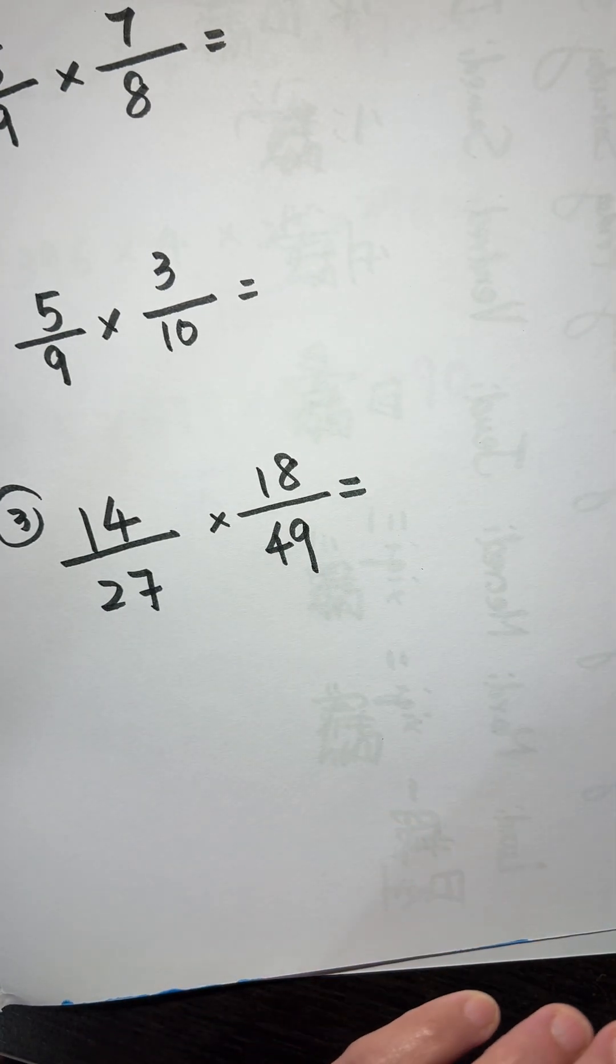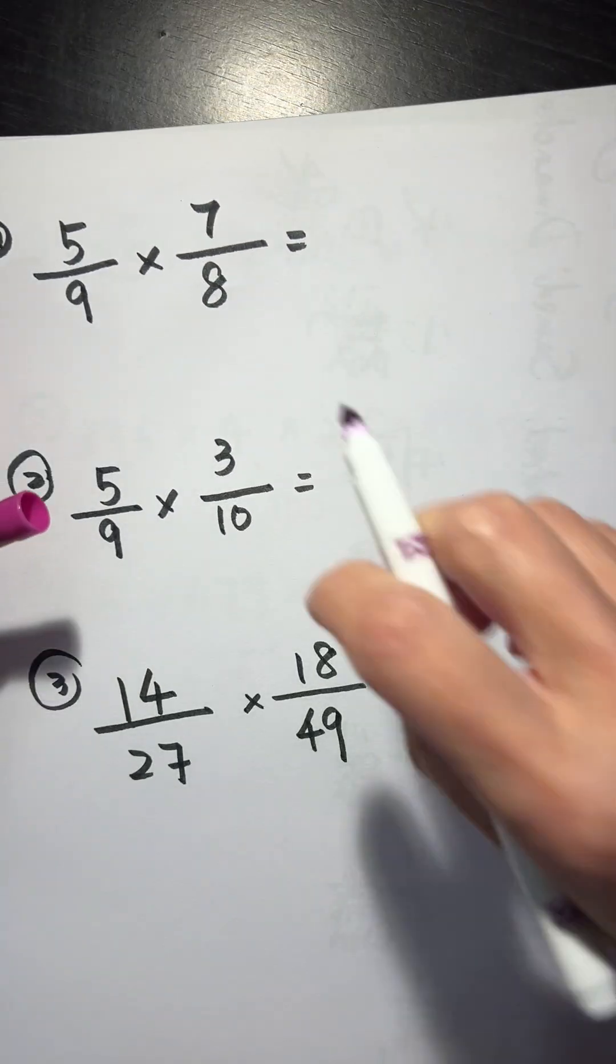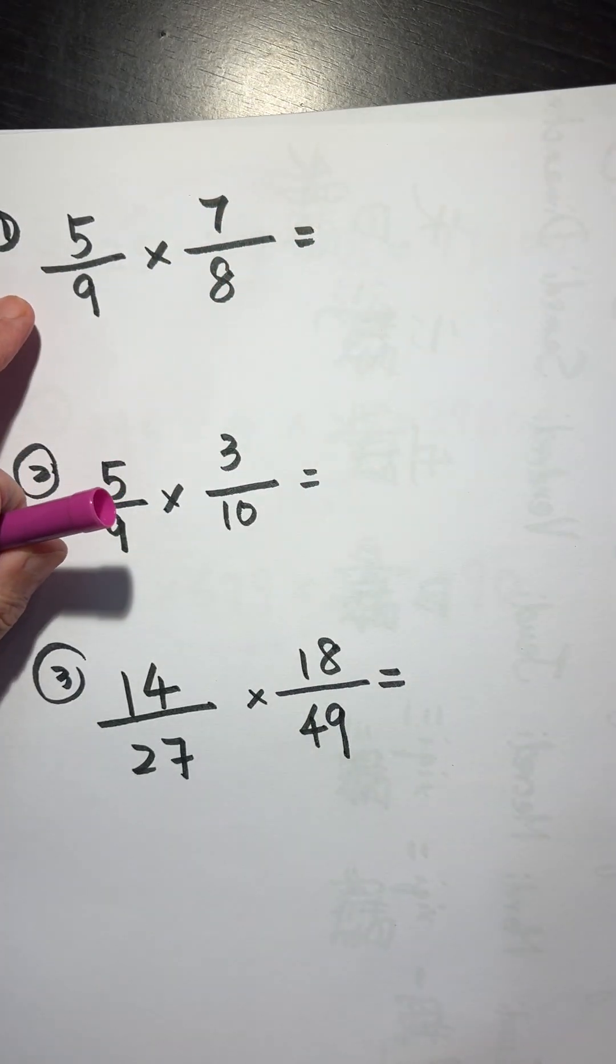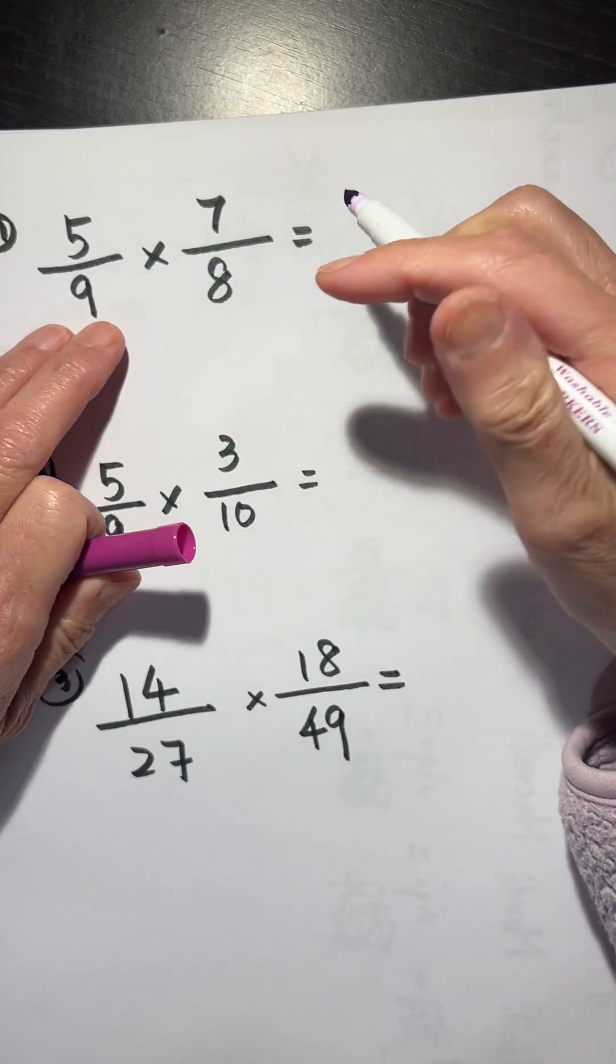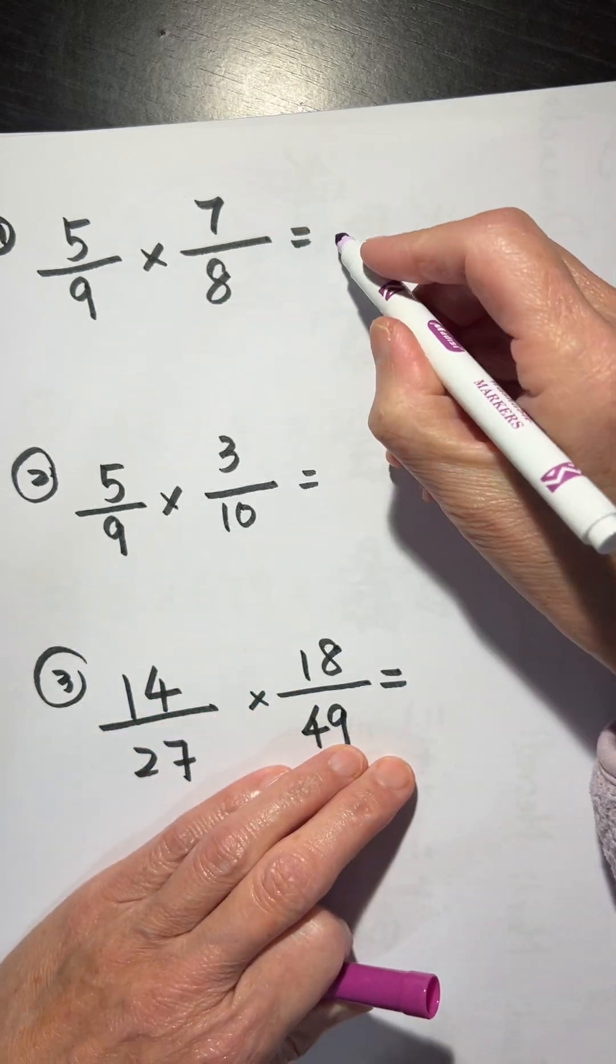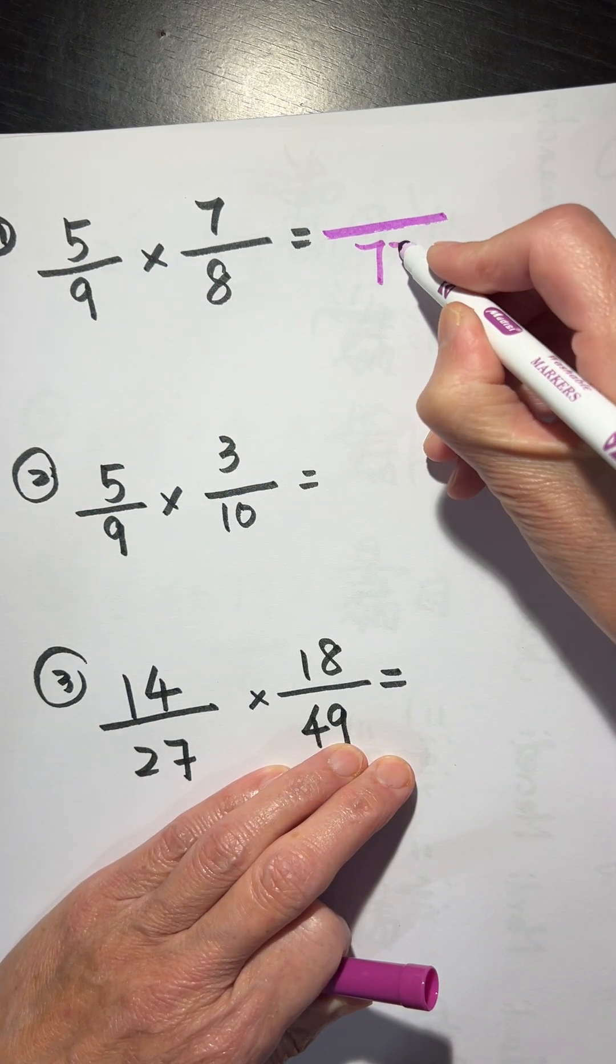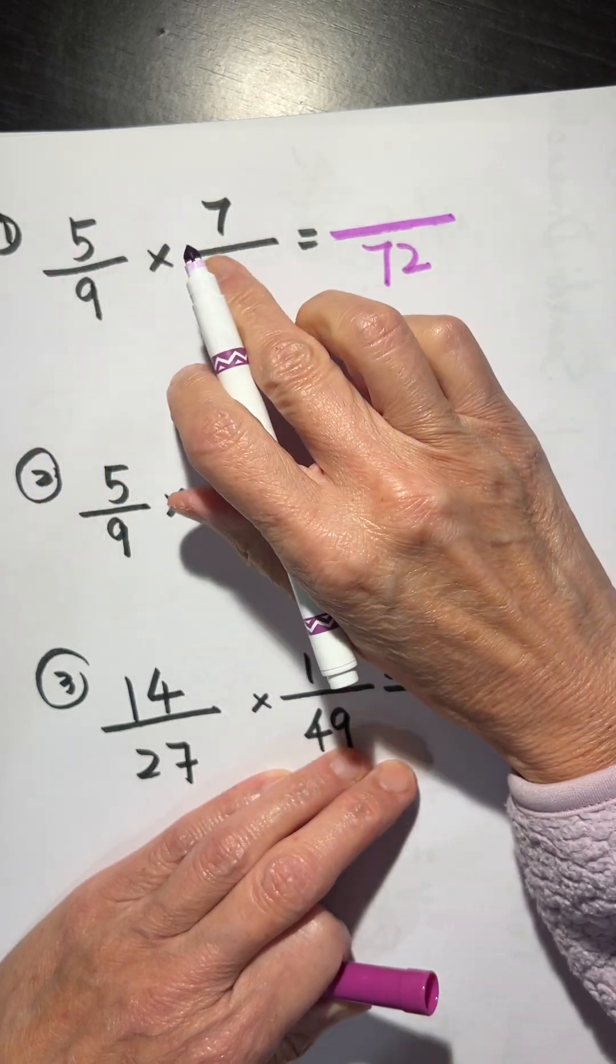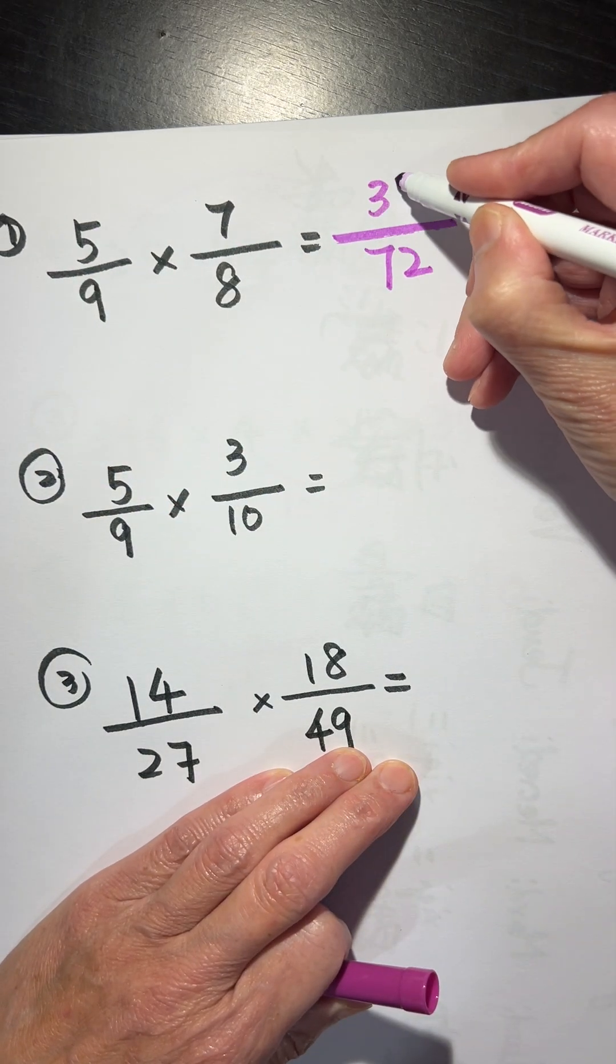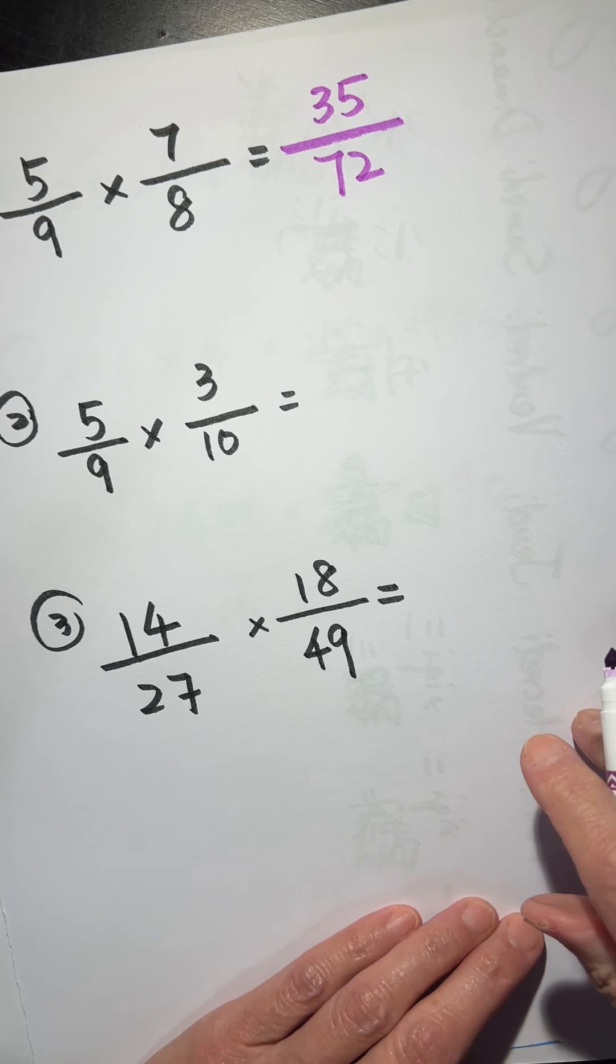Okay, I changed the color. There is no relationship, there is no factors in this number system. So, 9 times 8, 72. 5 times 7, 35. And that is it.